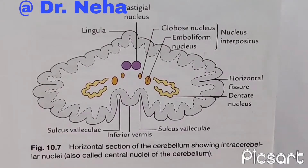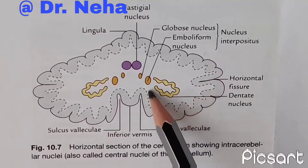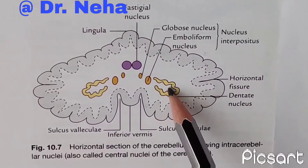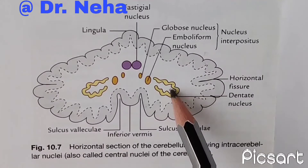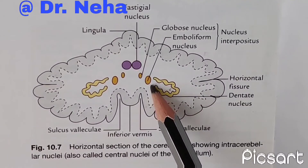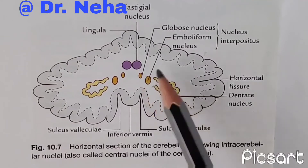Then we have the intracerebellar nuclei, which are masses of gray matter found in the white core of the cerebellum. First we have the dentate nucleus, which is the most prominent of the intracerebellar nuclei and the largest in primates, especially in humans. It is the nucleus of the neocerebellum and therefore receives afferent fibers from it. In sections it has the shape of a crumpled bag with its hilum facing anteromedially. The interior of the nucleus is filled with white matter made of efferent fibers that leave the nucleus through the hilum, forming the superior cerebellar peduncle.